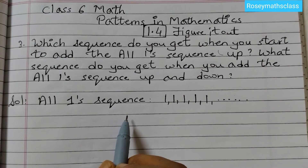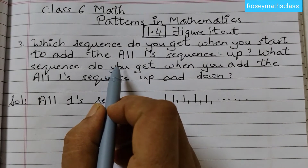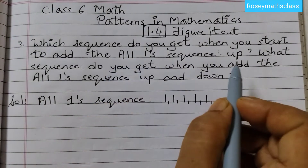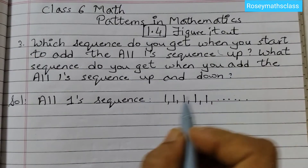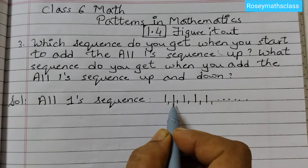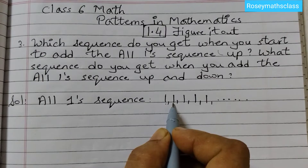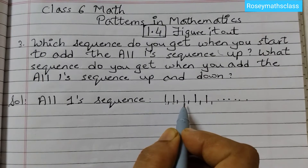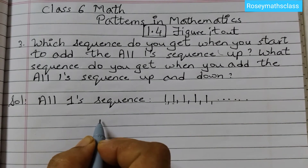Now the first part is when you add the all ones sequence up. Up means you move to the next number — like 1, and then the next number, again moving up to the next number. So we will see the first part.